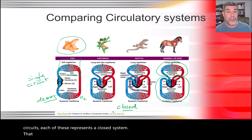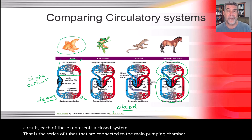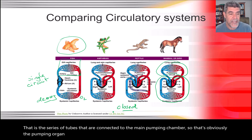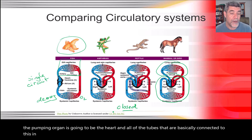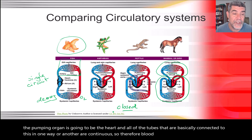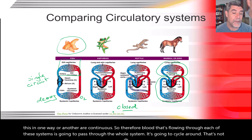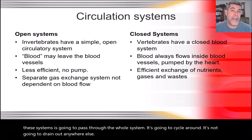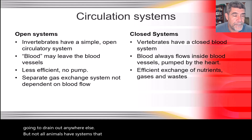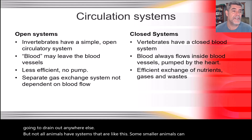A closed system is the series of tubes connected to the main pumping chamber — the heart. All of the tubes connected to it are continuous, so blood flowing through each of these systems passes through the whole system, cycling around and not draining out anywhere else. But not all animals have systems like this — some smaller animals can do with a system that is open.